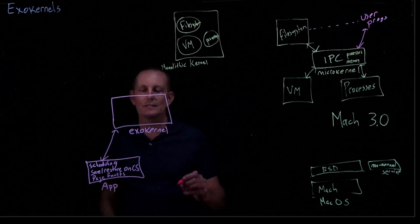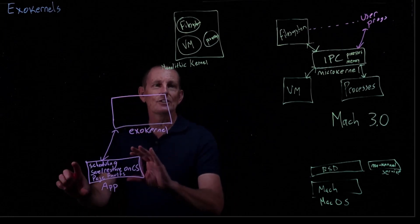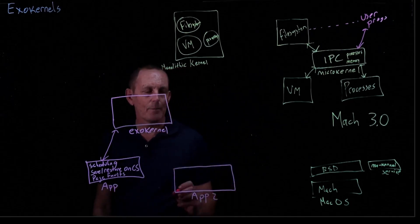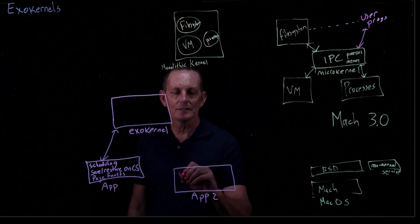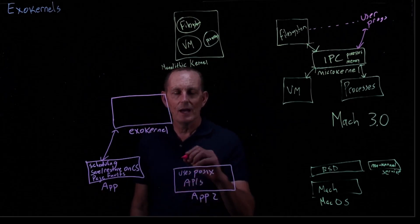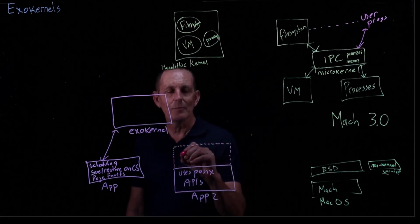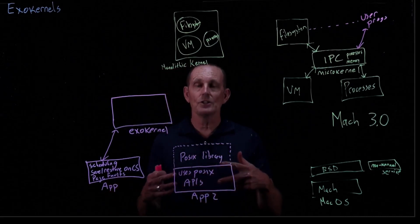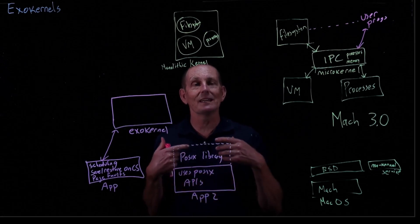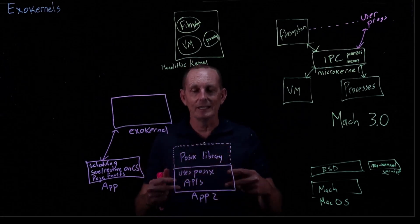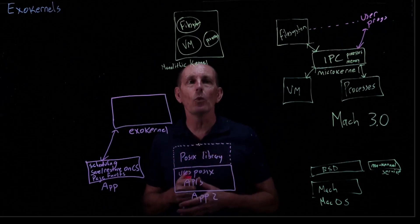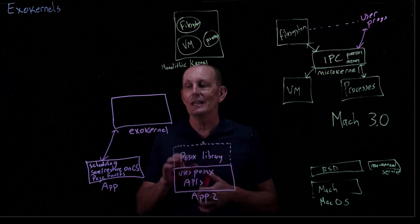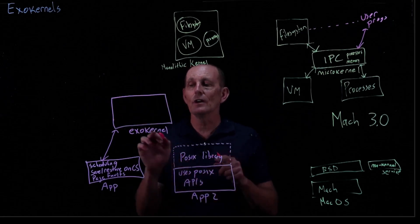The exokernel also exposes the idea of library OSes. So this might be an application that's written to deal with everything itself. You can imagine another application — a traditional application — that we're going to just relink. We'll call this app2, and app2 uses POSIX APIs, the Unix we've been talking about quite a bit. It can then be linked with a POSIX library that supports all of the POSIX system calls. All applications, when making a system call, actually just make a call into a local library that itself makes a system call. In this case, the POSIX library doesn't make a direct one-to-one relationship between a POSIX call and a kernel system call.